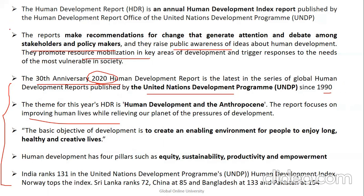The four pillars of human development are: equity, sustainability, productivity, and empowerment. India's latest rank is 131. Norway tops the index; Sri Lanka is at 72, China at 85, Bangladesh at 133, and Pakistan at 154. You need to know India's rank and that Norway tops the Human Development Index.